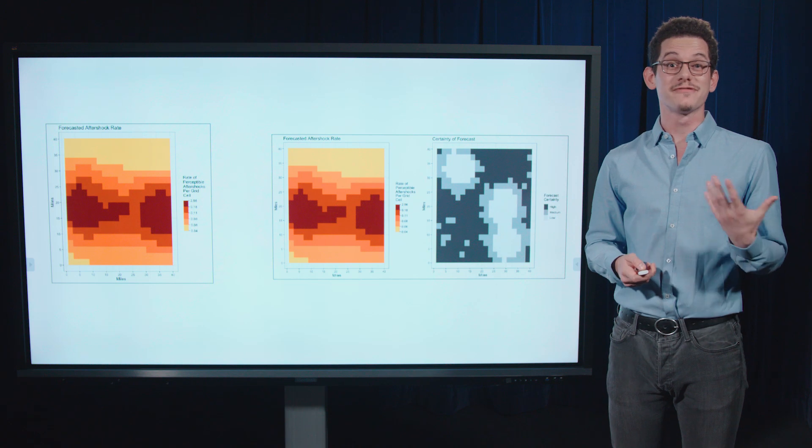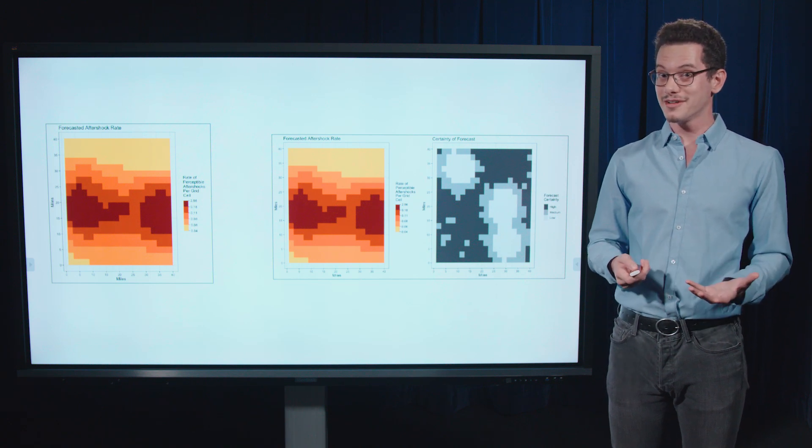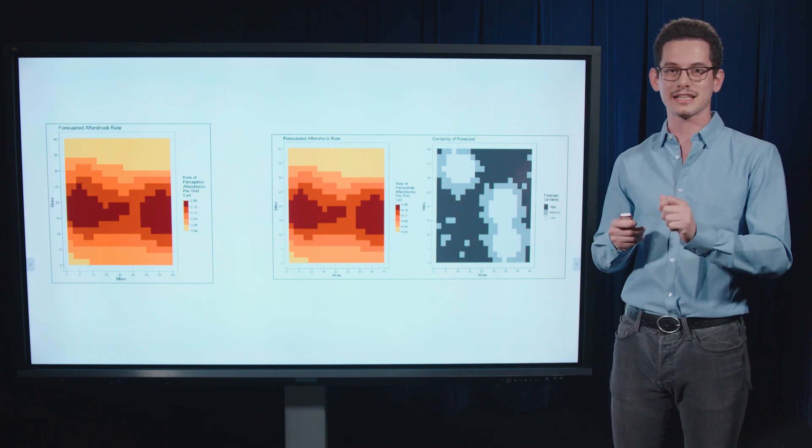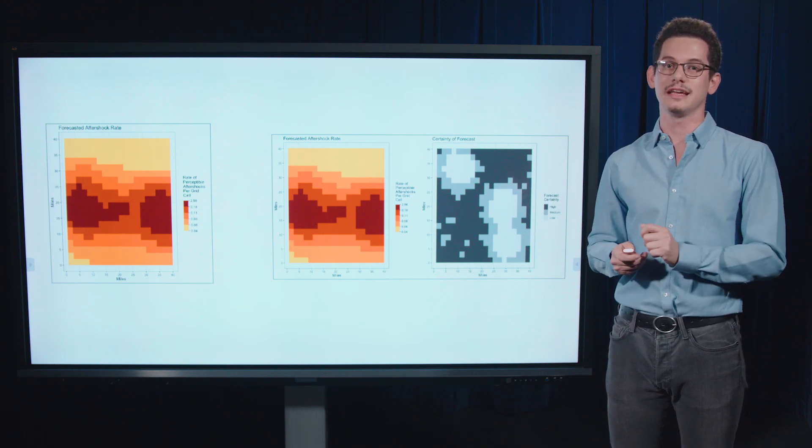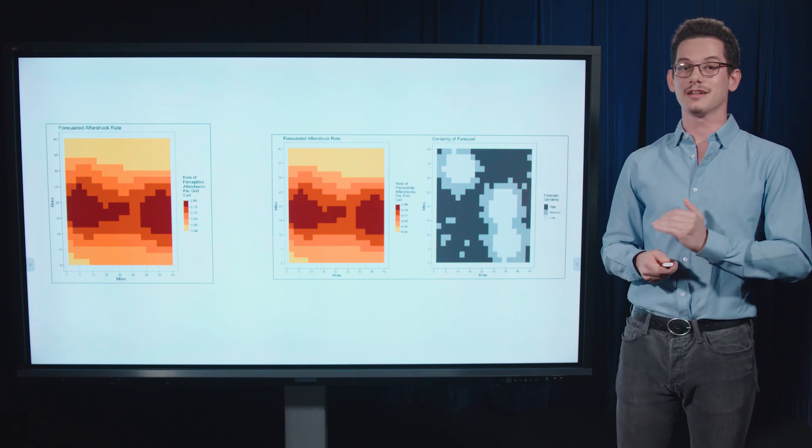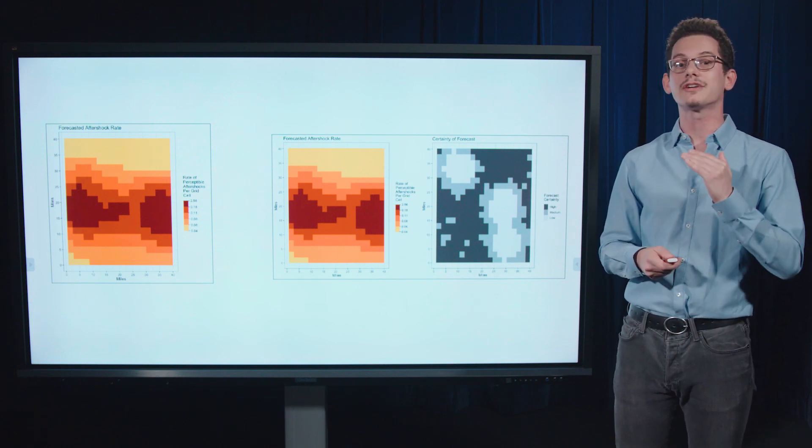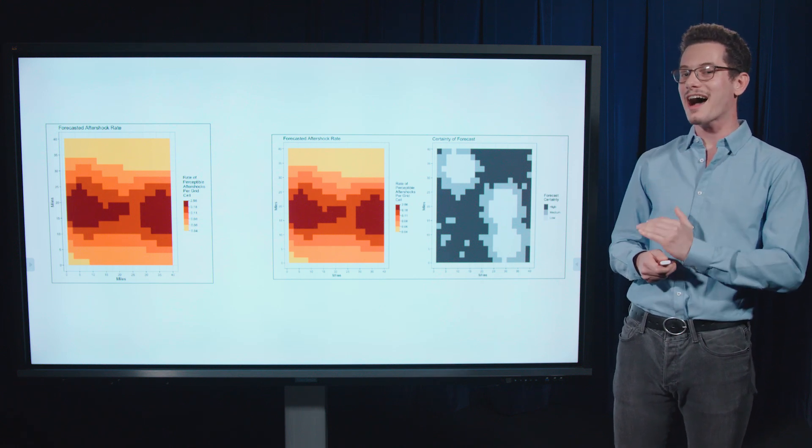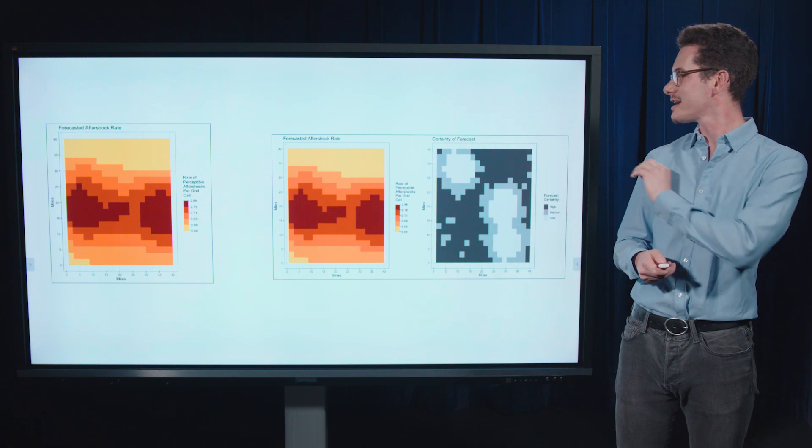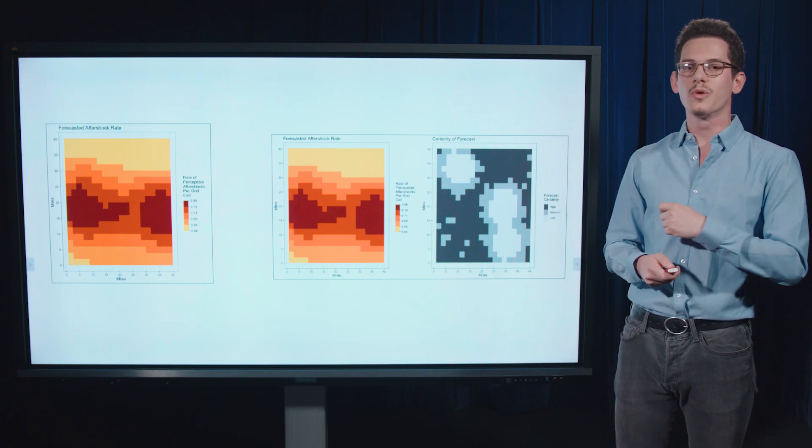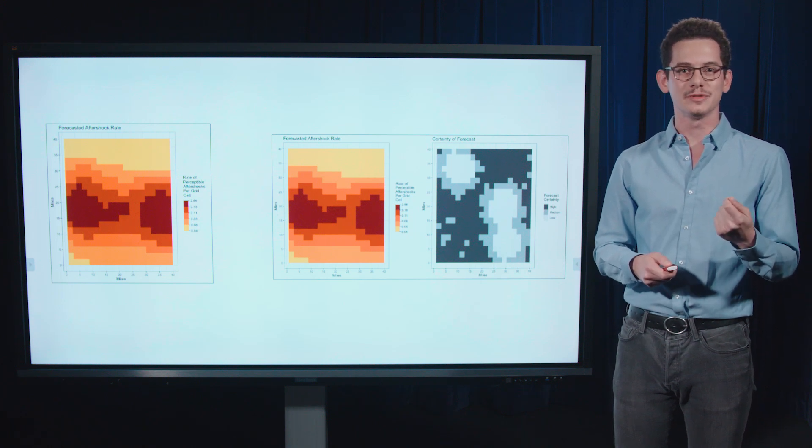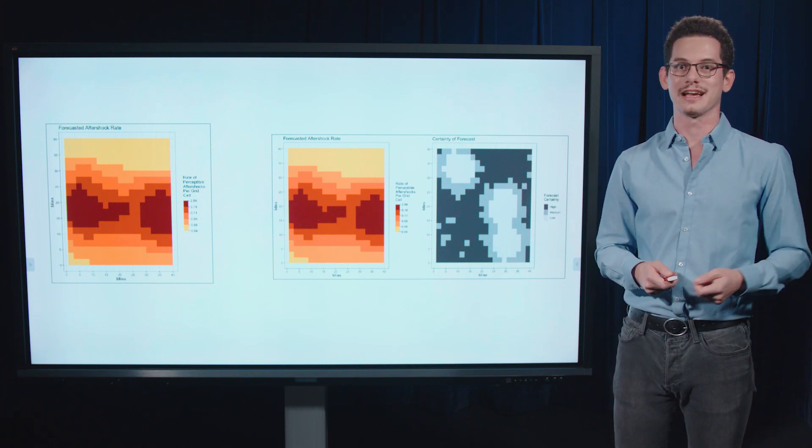So as I said, every forecast comes with error. And this visualization now has the forecast map adjacent with its uncertainty map. And so in the uncertainty map, the darker the color, the higher—so now it's a certainty map actually—the higher the certainty level is of the forecast. So areas that have a really dark color, we're much more sure that the forecast should be accurate in the next week.